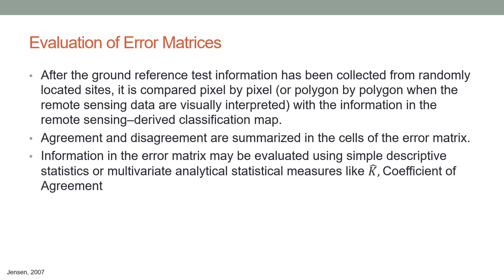After the ground reference test information is collected from randomly located sites, it is compared pixel by pixel with the remote sensing-derived classification map. You look at the reference pixel on the ground, identify the land cover class there, and check the same pixel on the map to see if the same land cover is represented. For a very good map, you would expect large agreement between every pixel on the map and every pixel on the ground. Agreement and disagreement are summarized in the cells of the error matrix, which may be evaluated using descriptive statistics like user's accuracy, producer's accuracy, and overall accuracy, or multivariate measures like kappa-hat.